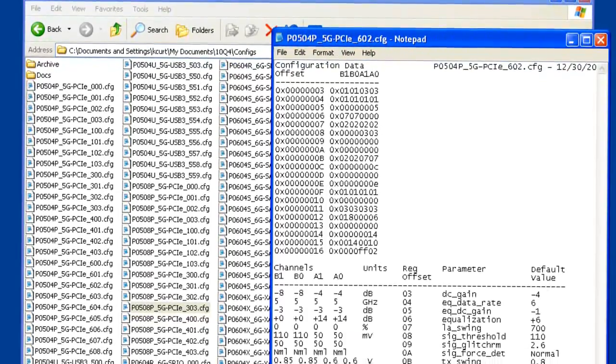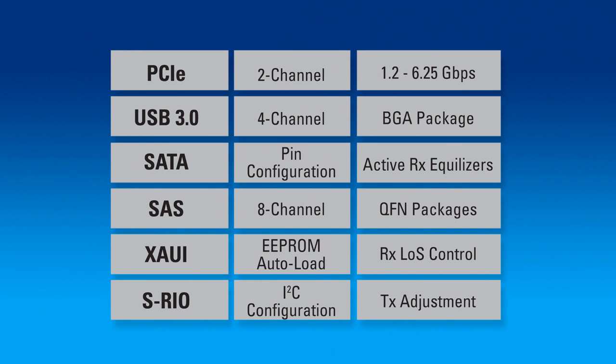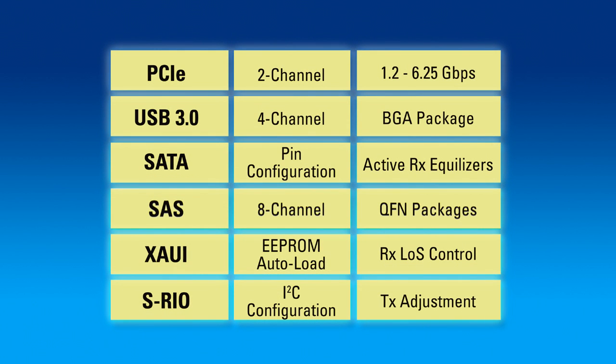To conclude this demonstration, we've shown that IDT repeaters can support reliable 5 and 6 gigabit per second data transfers across complex channels for PCI Express, USB 3 and 6 gigabit per second SATA. IDT offers signal conditioners for many popular protocols including PCI Express, USB 3, SATA, SAS, ZOWI, SRIO and more. Devices are available in various widths from 2 to 16 channels and in package options from 20 QFN to 196 BGA.